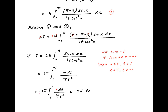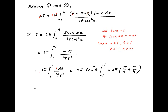This is equal to 2 pi times tan inverse t evaluated with limits minus 1 and 1. Putting in the limits, the value of I is equal to 2 pi times (pi upon 4 minus of minus pi upon 4), which simplifies to 2 pi times pi upon 2. Therefore the value of the given integral is equal to pi squared, which is the required answer.